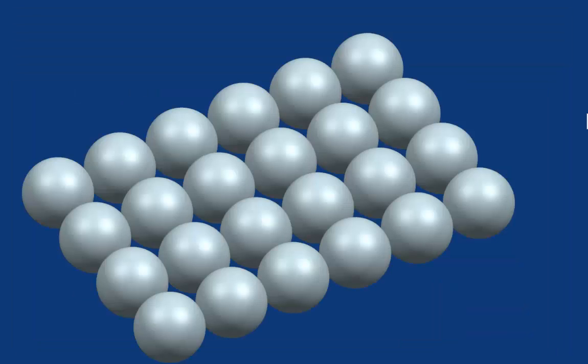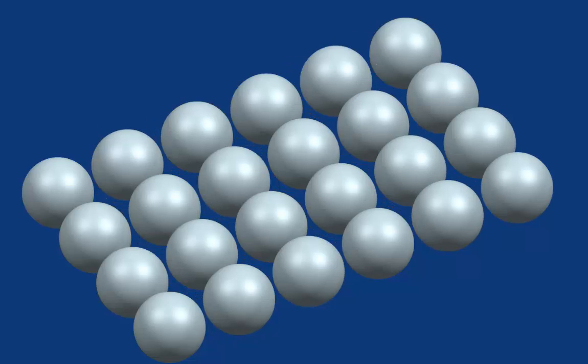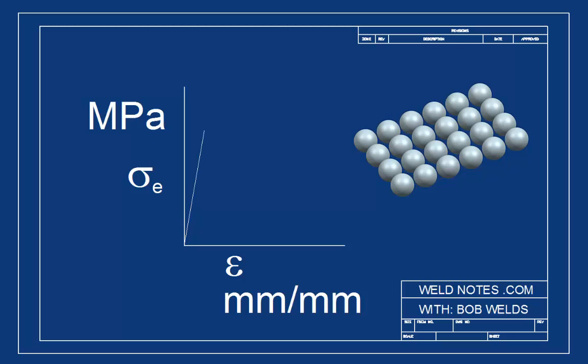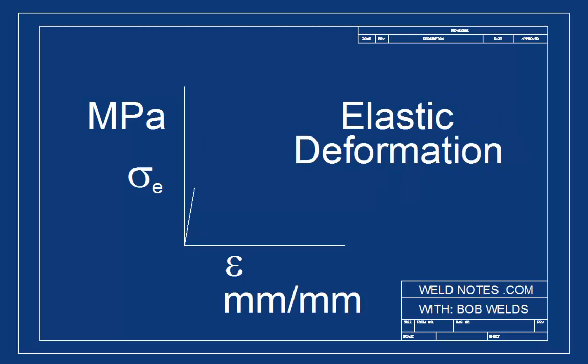Inside our bar, the metal atoms were getting stretched farther and farther away from each other. But none of them was being moved out of position. We call this kind of stretching elastic deformation. When we stretch the bar this way, it remains unchanged. If we let go, it would go back to its original length.